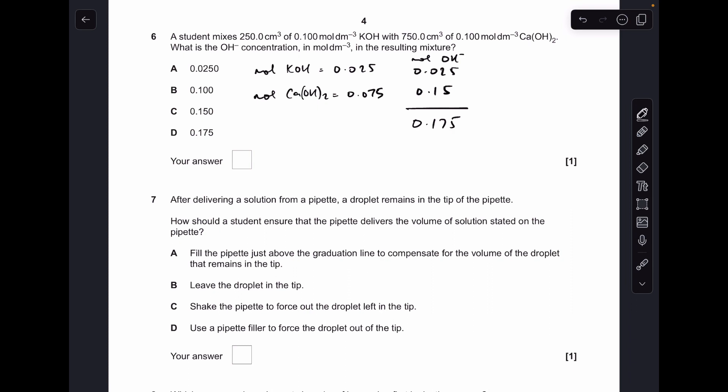So the total moles of OH- ions is 0.175. The total volume is 250 plus 750 cm³, so it's one decimeter cubed, so that's the concentration as well. So D is the answer.